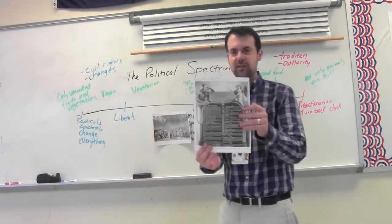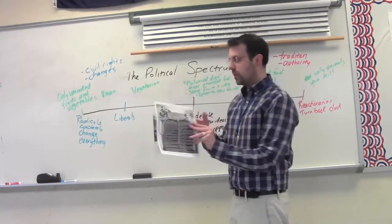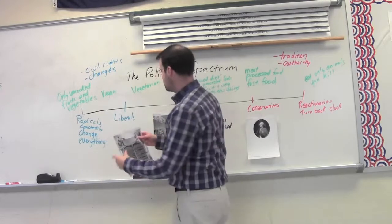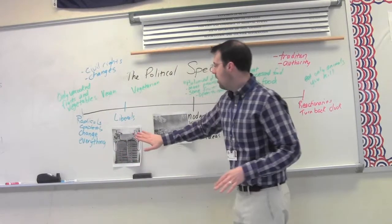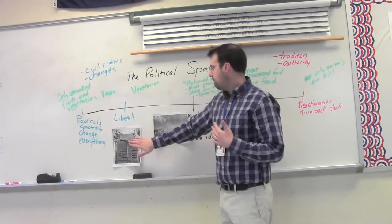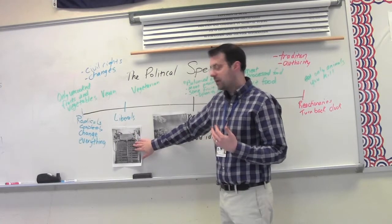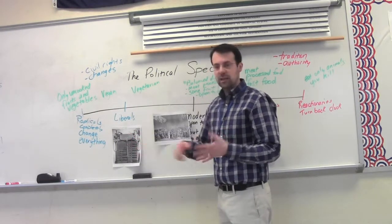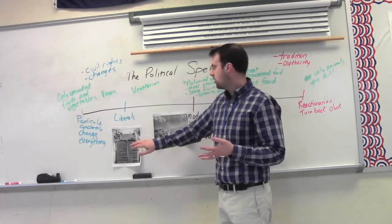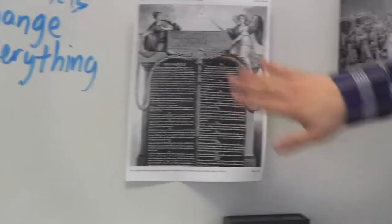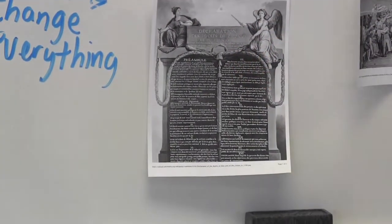From there, we got the Declaration of Rights of Man and Citizen. This was passed by the National Assembly or issued by the National Assembly. This is firmly liberal. This is definitely calling for some changes. Voting rights for all men who pay taxes. It talks about taxation, people paying taxes according to their ability. It talks about religious freedom. That's definitely a liberal document right there.